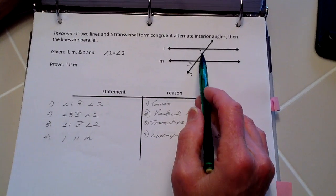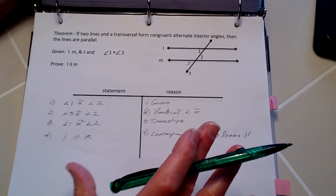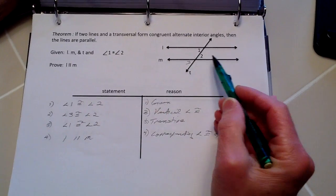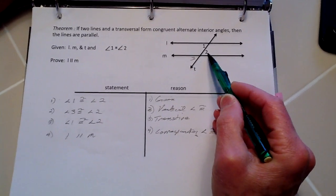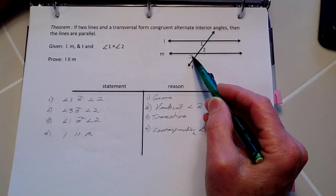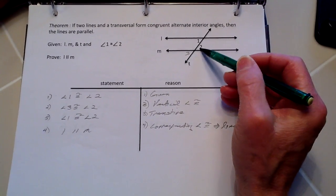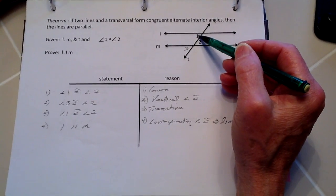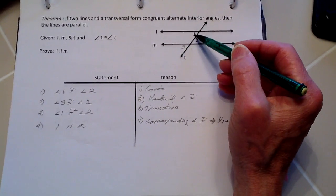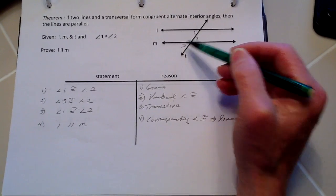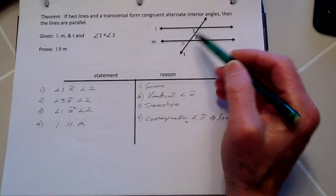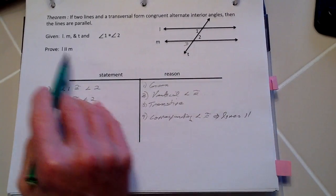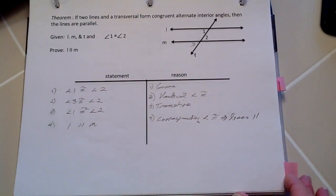We know that angles two and three are vertical angles, so they are congruent. Since we're already given that angles one and two are congruent, we now know angles one and three are congruent. That goes right back to the postulate: if corresponding angles are congruent, then the lines are parallel.